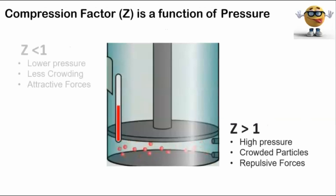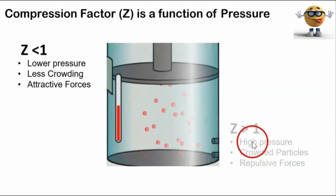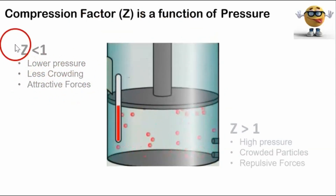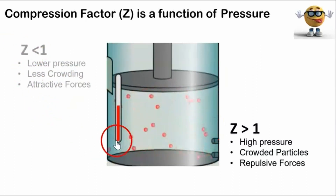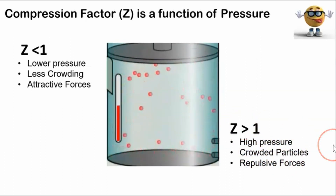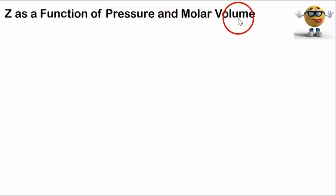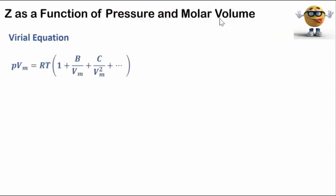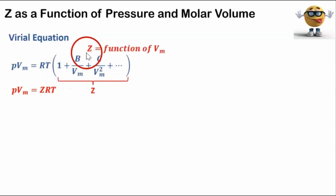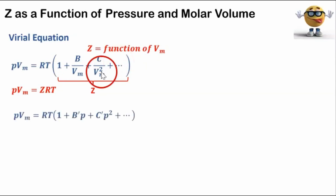The compression factor is also a function of pressure. As a gas expands or is compressed, the compression factor changes. If the gas is expanded so there's lower pressure, there's less crowding between particles, attractive forces are dominant, and the compression factor is often less than one. However, if the gas is compressed under high pressure, particles are crowded and repulsive forces are dominant, and the compression factor is greater than one. The compression factor is also a function of molar volume, and these two parameters can be modeled using the virial equation of state, which is similar to the ideal gas law but with the compression factor built in.